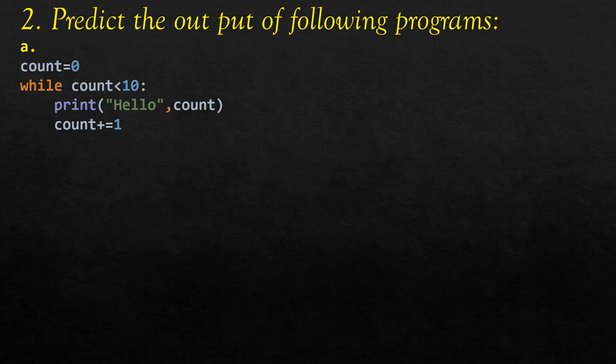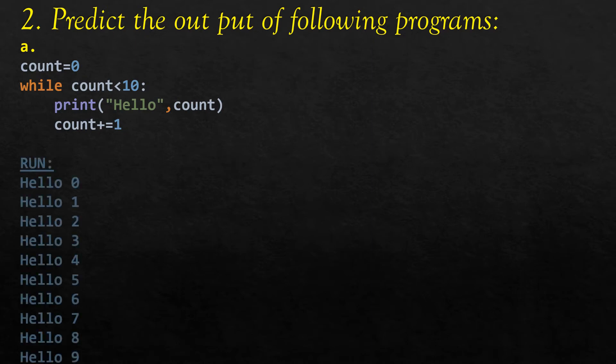The second question asks to predict the output. A count variable is initialized with zero, and while count is less than 10 it prints 'hello' and count, incrementing count by 1 each time. The output starts at hello 0, hello 1, hello 2, and continues until count reaches 9.